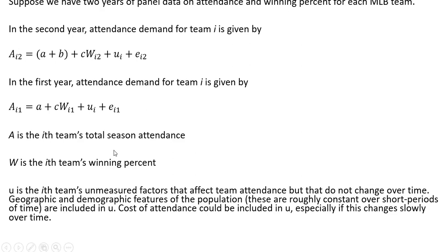And now for some of these other variables. U doesn't have a one or two subscript, it's just U subscript i. This is the team's unmeasured factors that affect team attendance but do not change over time, such as geographic and demographic features of the area that the team operates in. These are roughly constant over short periods and are included in U. Cost of attendance could be included in U, especially if it changes very little over time. E is the error term.